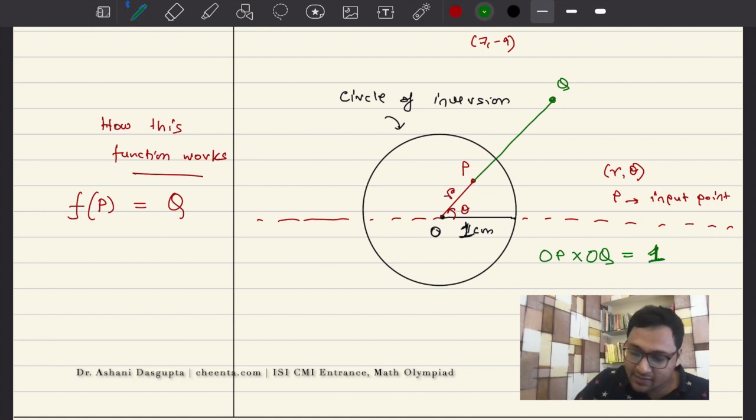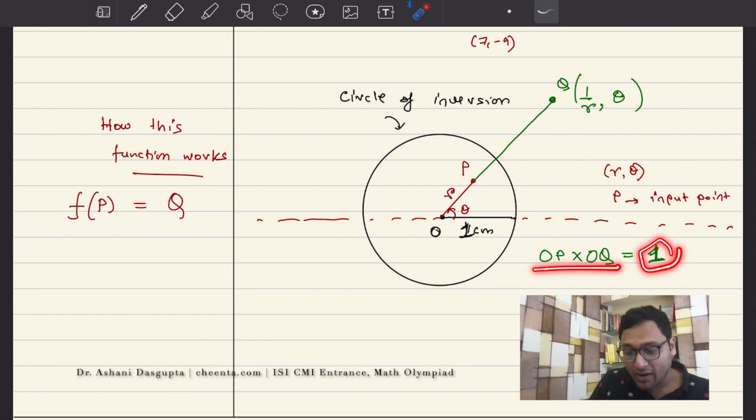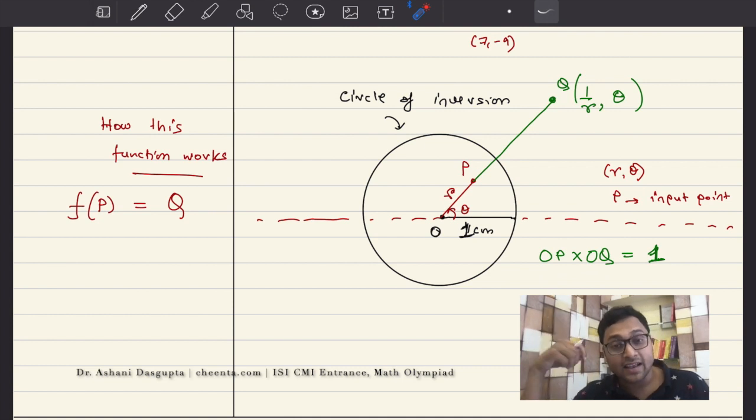The distances from the origin are reciprocals of each other. So this has the polar coordinate of theta and 1 over R. Why? Because of course, the length of OP is R. So the length of OQ must be 1 over R. Only then the product will be 1. And the angle is theta because of course, it is on the same straight line. Q is on the same straight line as P. That is by definition. That's how the function works.